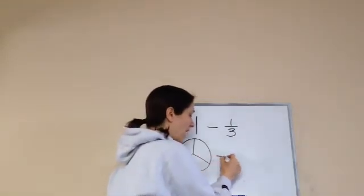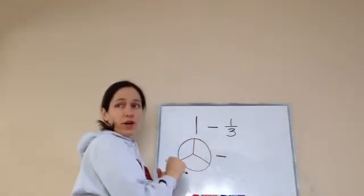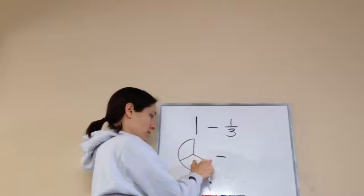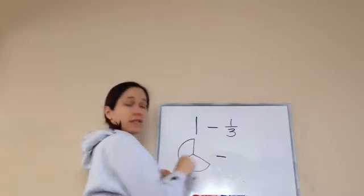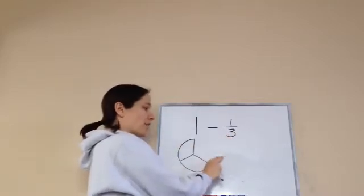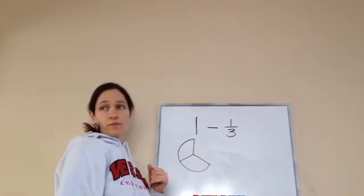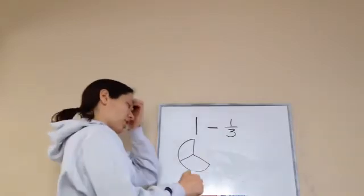So, this is one whole pie. I just broke it up in 3. And they're wanting me to take away 1 third of it. So, I took off this piece. So, that means take away 1 third of it. So, how much is left? 2 thirds. Okay, 2 thirds.